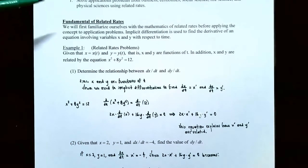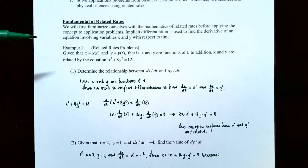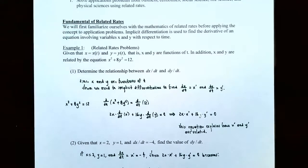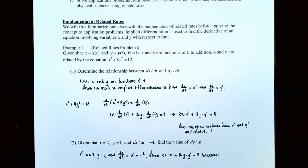We're going to first familiarize ourselves with the mathematics of related rate problems, and then apply the concept to application problems. Implicit differentiation is used to find the derivative of an equation involving multiple variables like x and y. Since x and y are functions of time, when we take the derivative we'll have x prime and y prime, which are dx/dt and dy/dt.